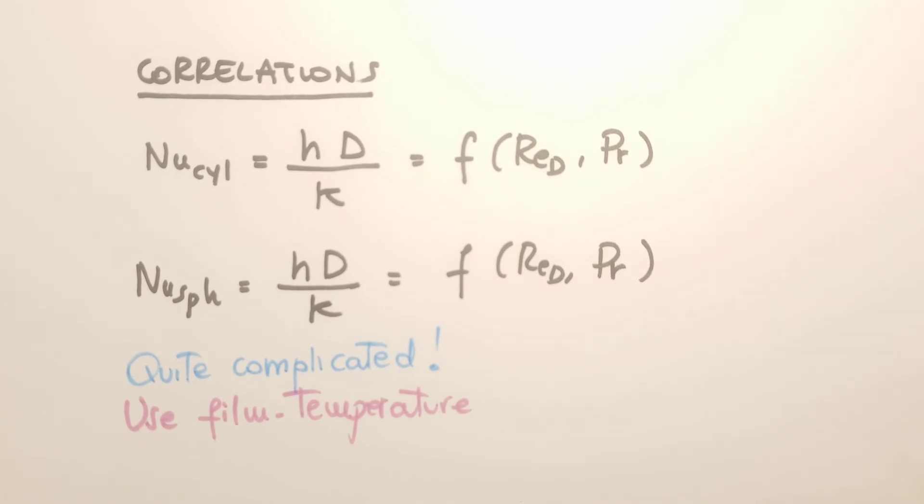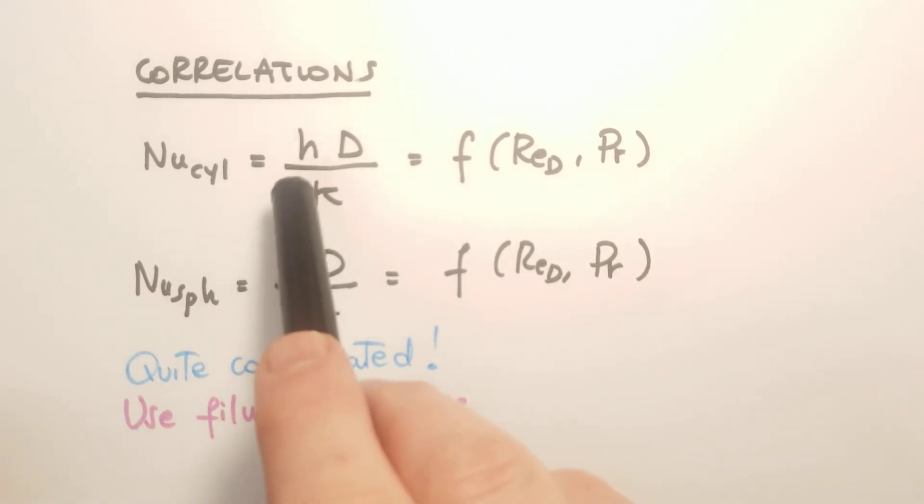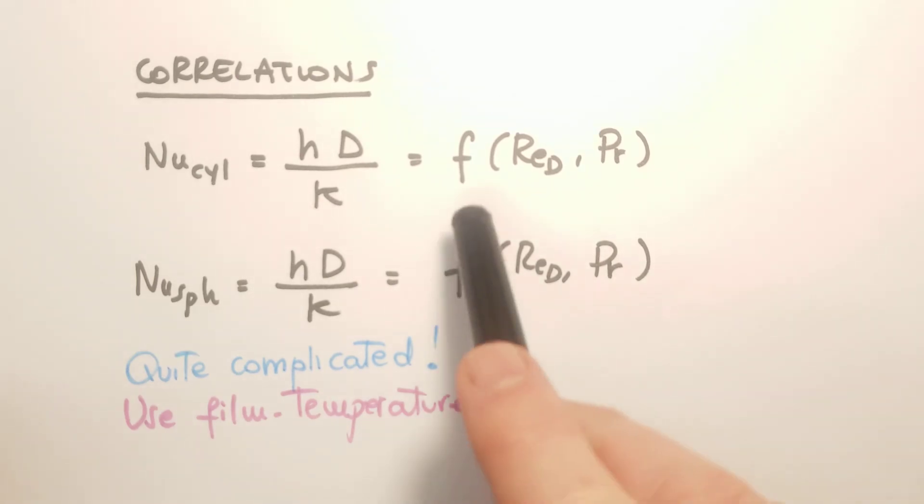So just like the flat plate case, then we can use correlations to find the global Nusselt number, defined as h times d divided by the thermal conductivity.